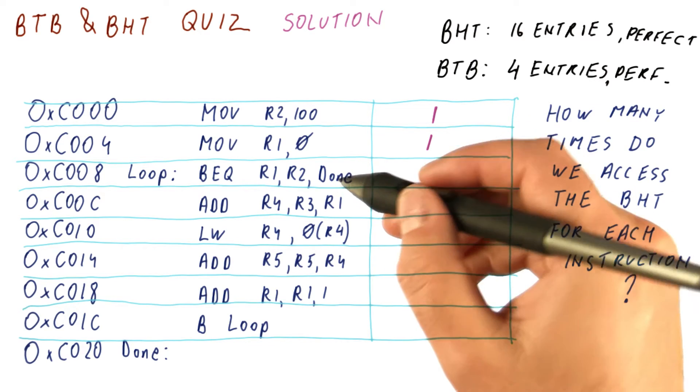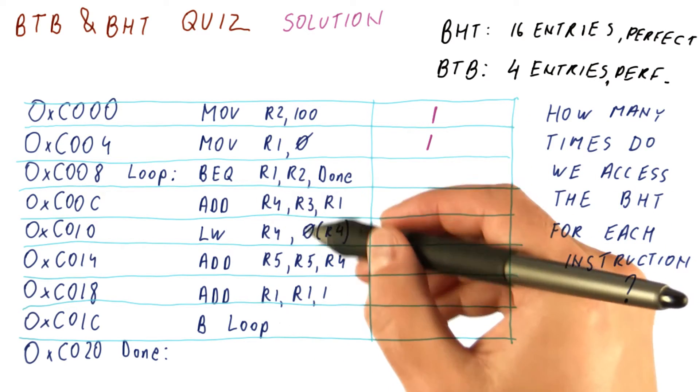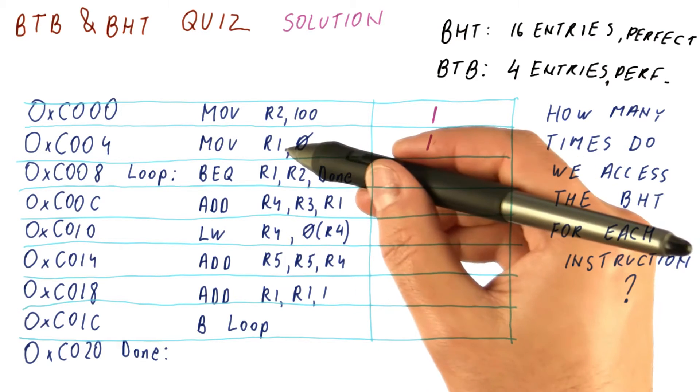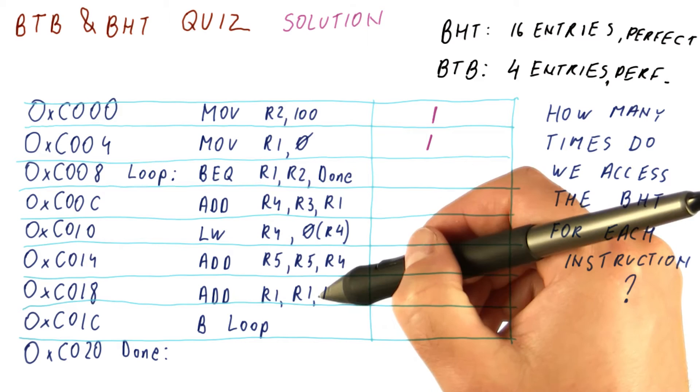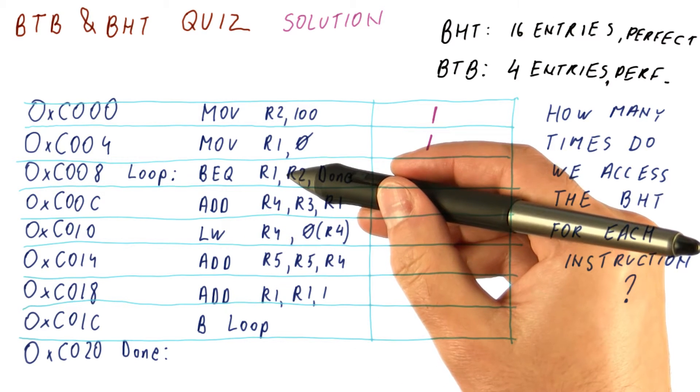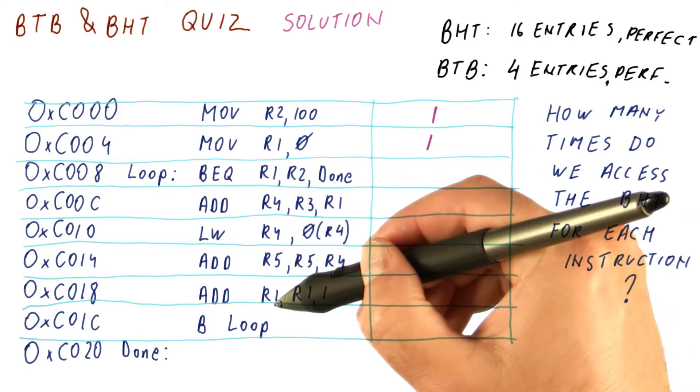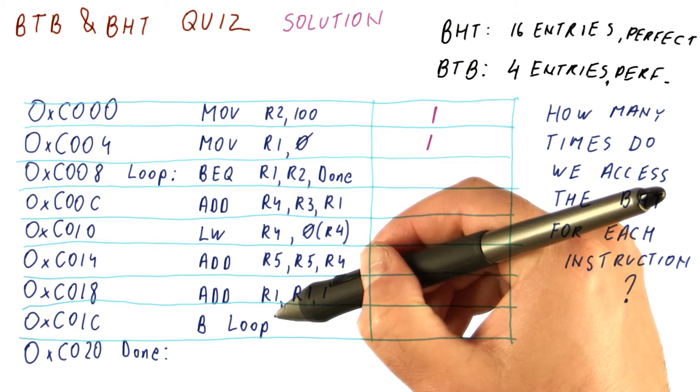Now we have a loop. This loop will execute as long as R1 and R2 are different. R1 initially has a zero value, goes through here, gets incremented, and then we branch back.